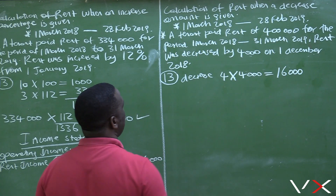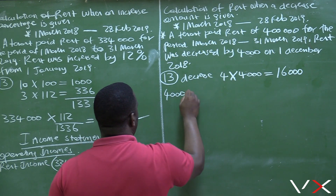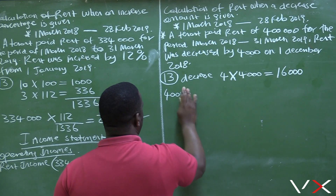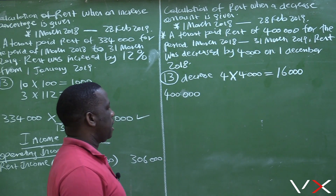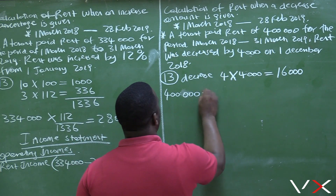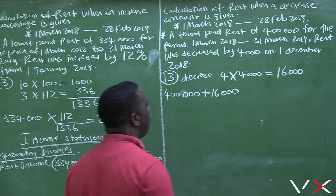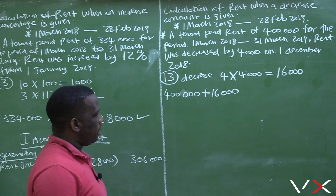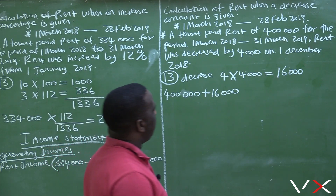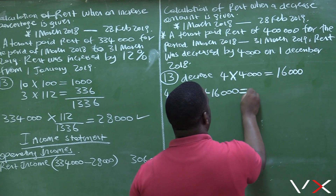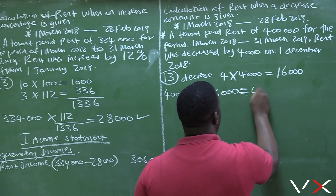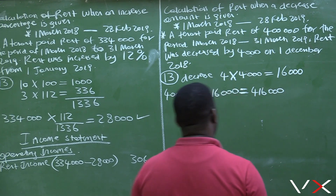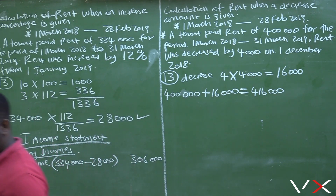So what do you need to do in this case? You need to take the total amount, which is four hundred thousand — the total amount received for 13 months — which includes the decrease. And we add back the sixteen thousand, assuming that there was no decrease. So the total amount that would have been received is four hundred and sixteen thousand.